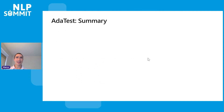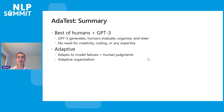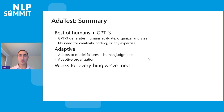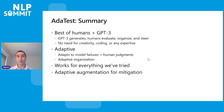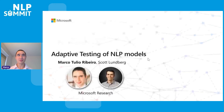In summary, AdaTest is the best of humans and GPT-3 combined: GPT-3 generates, humans evaluate and organize. You don't need creativity, coding, or any expertise whatsoever. It's adaptive — this helps avoid the need for luck, and the hill-climbing behavior really helps. This works for everything we've tried so far, and augmentation works well for mitigation too. But most importantly, the biggest advantage over CheckList is that it's fun and easy. Just play — anyone can do it. It's not writing code. We think this has lots of potential. It's work in progress, but I thought I'd present it to you.